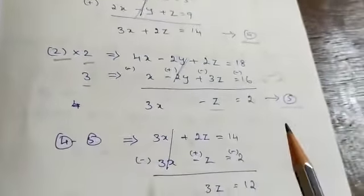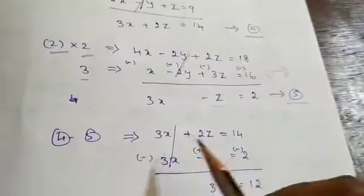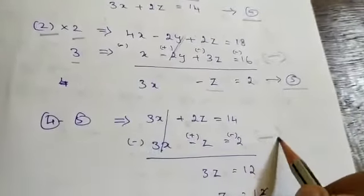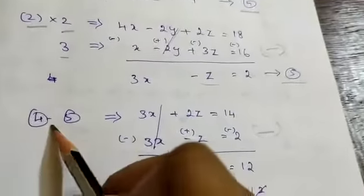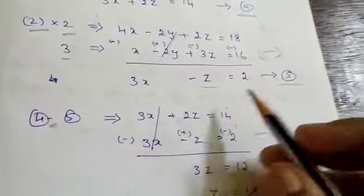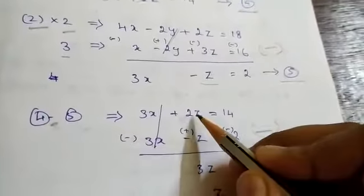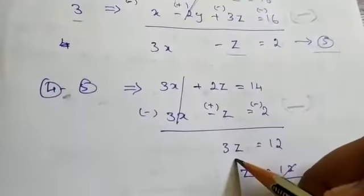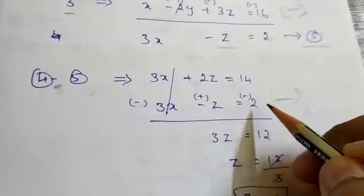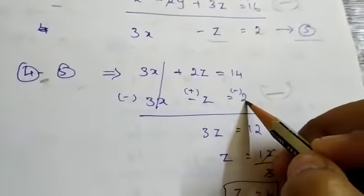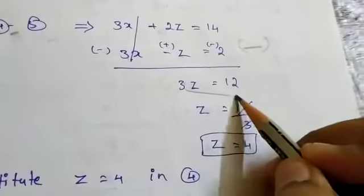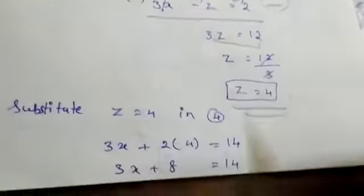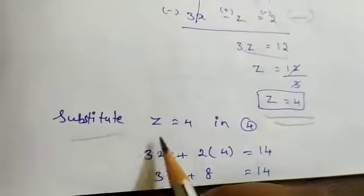Now with equations 4 and 5: subtract equation 5 from equation 4. The 3x terms get cancelled. So plus 2z minus z gives 3z and 14 minus 2 is 12. So z equal to 12 divided by 3, which gives z equal to 4. We have found one variable.